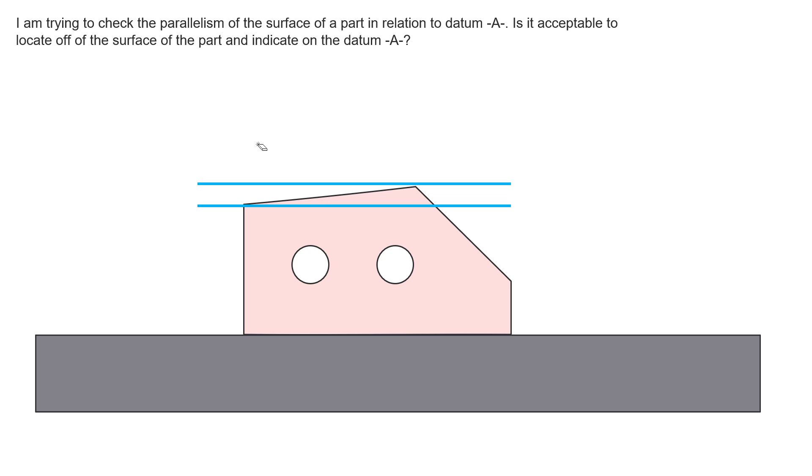Here we have a part that has clearly some parallelism error, right? And if this tolerance zone is what we're calling our tenth thou tolerance zone, we can see that the parallelism of this top surface with respect to the bottom surface is right at the limit of being inside our tolerance. We are within our tolerance just barely though.